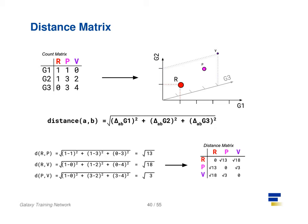Here we use the Euclidean distance on a three dimensional data set of three genes — G1, G2, and G3 — and three cells — R, P, and V. The distance between any two cells can be calculated as the sum of squares of the difference in gene values. Note how the distance matrix is symmetrical along the diagonal, confirming that the distance from cell R to V is the same as the distance from V to R, as expected.